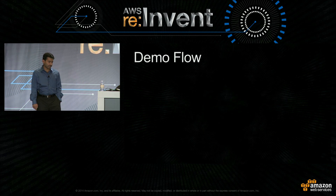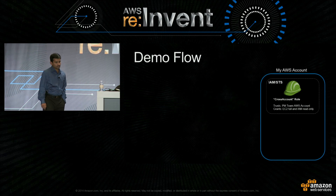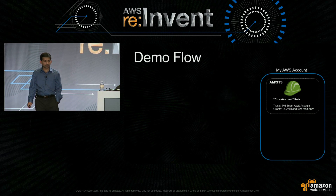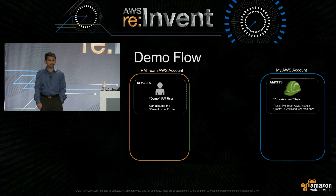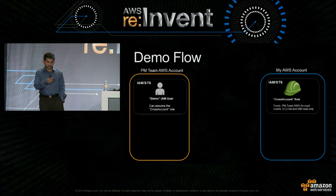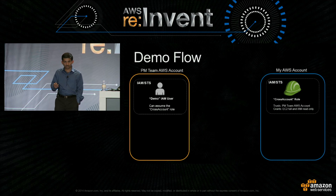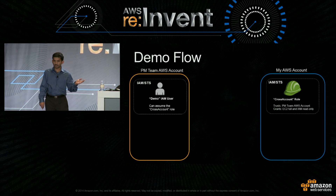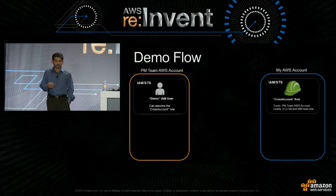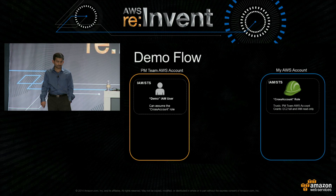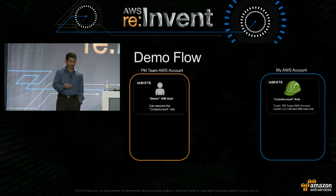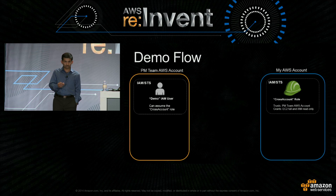If you are going to assign some privileged actions to someone else, we highly recommend that you protect the role assumption using a multi-factor authentication device. So let's look at the demo flow. I have my AWS account, and we also have our product management team's AWS account. What I want to do is have someone in the team's account access my account. So I have created a cross-account role in my account that trusts the team account, granting some EC2 permissions and some IAM permissions — no other permissions.